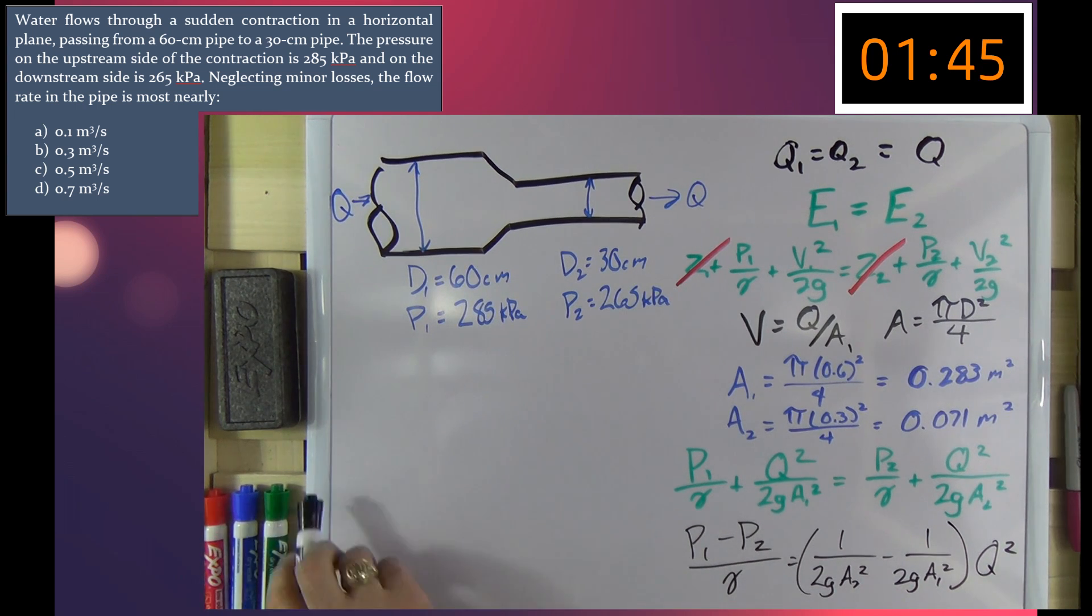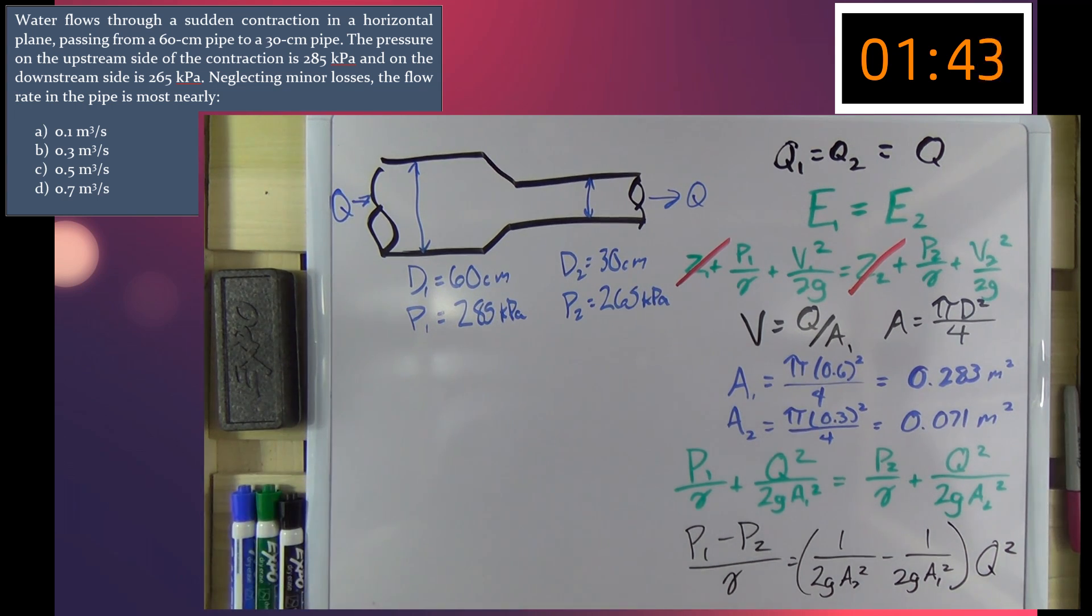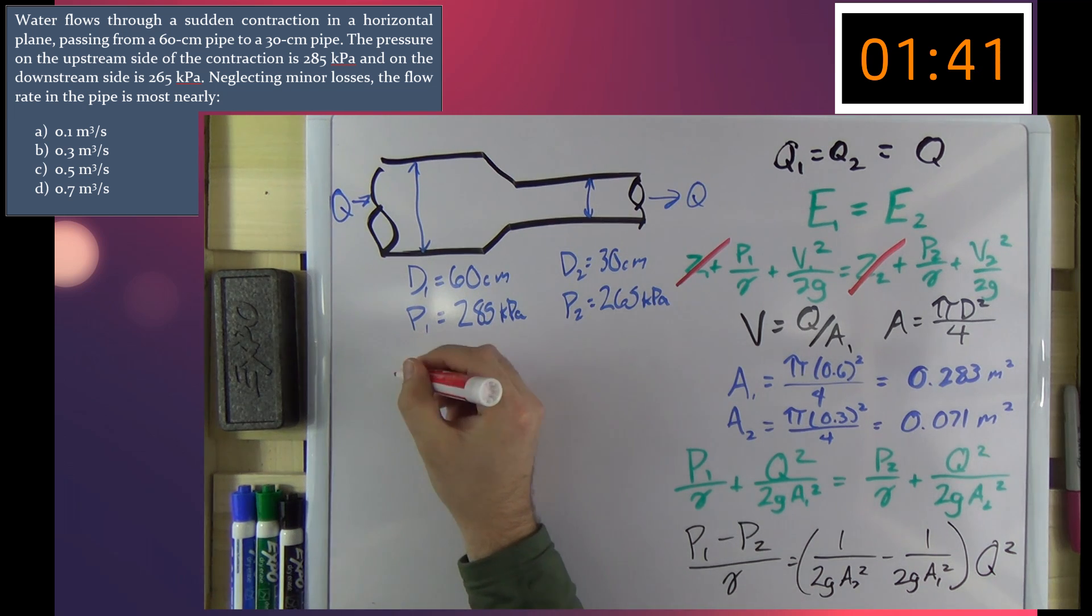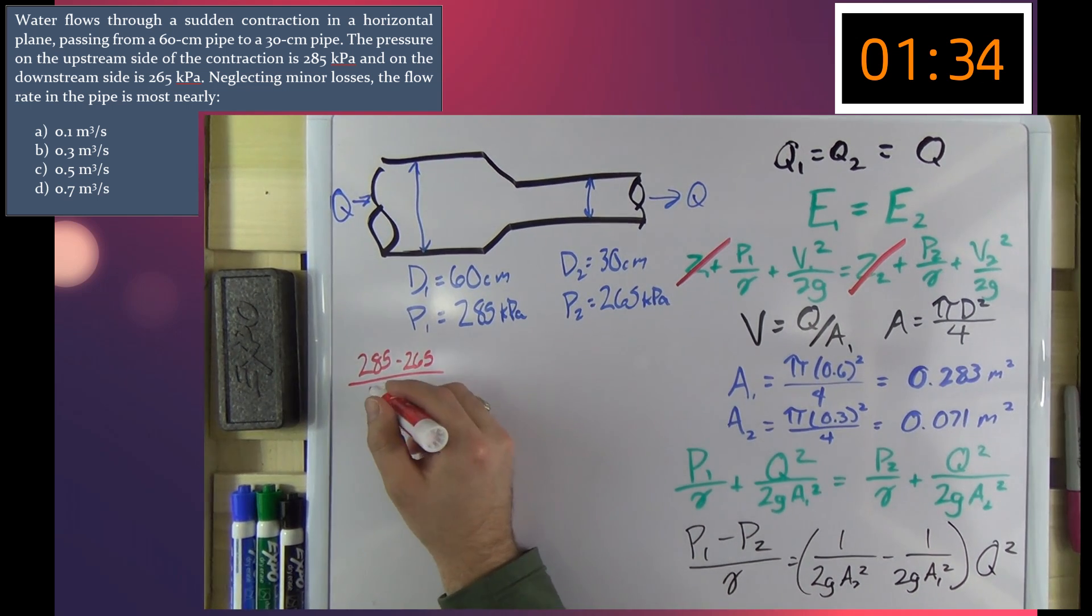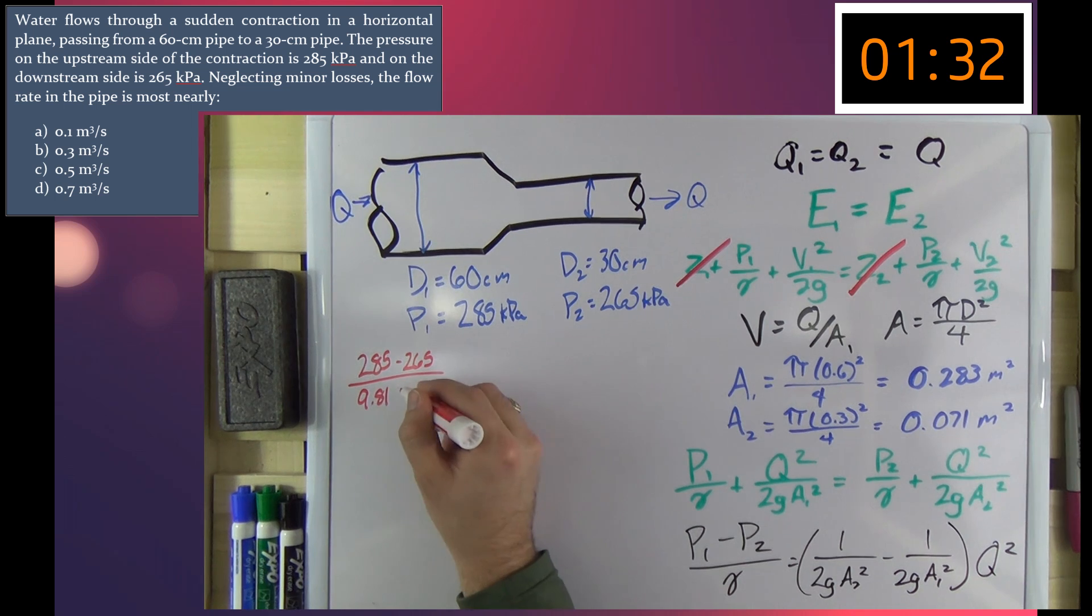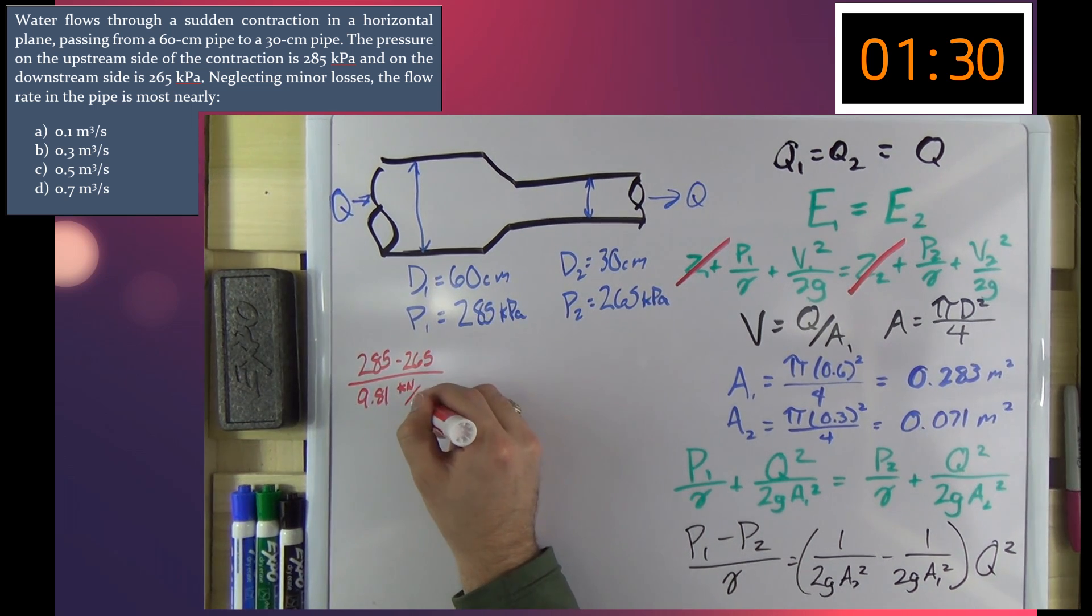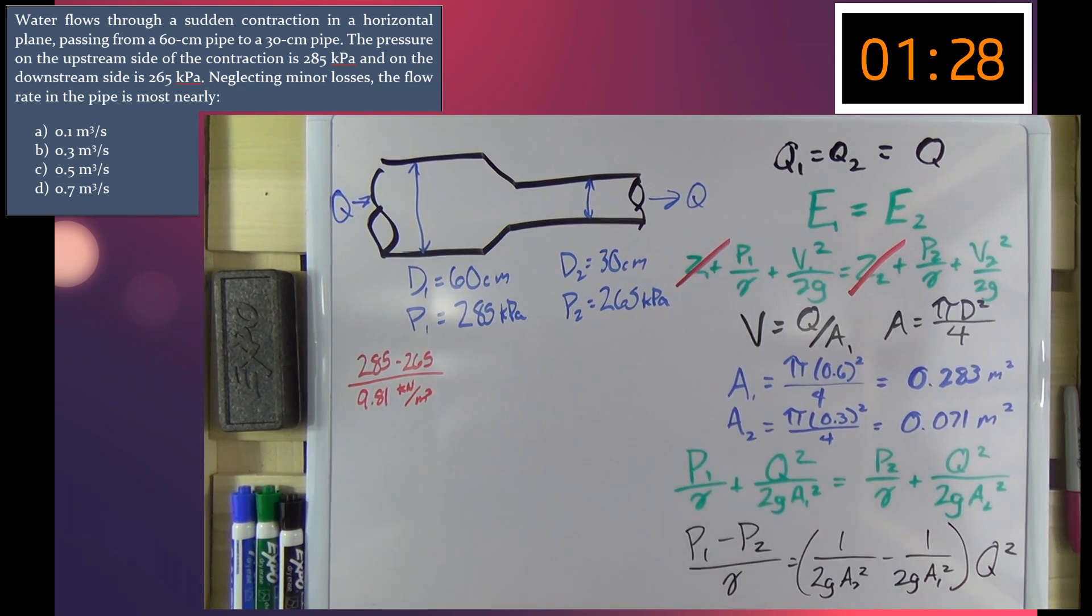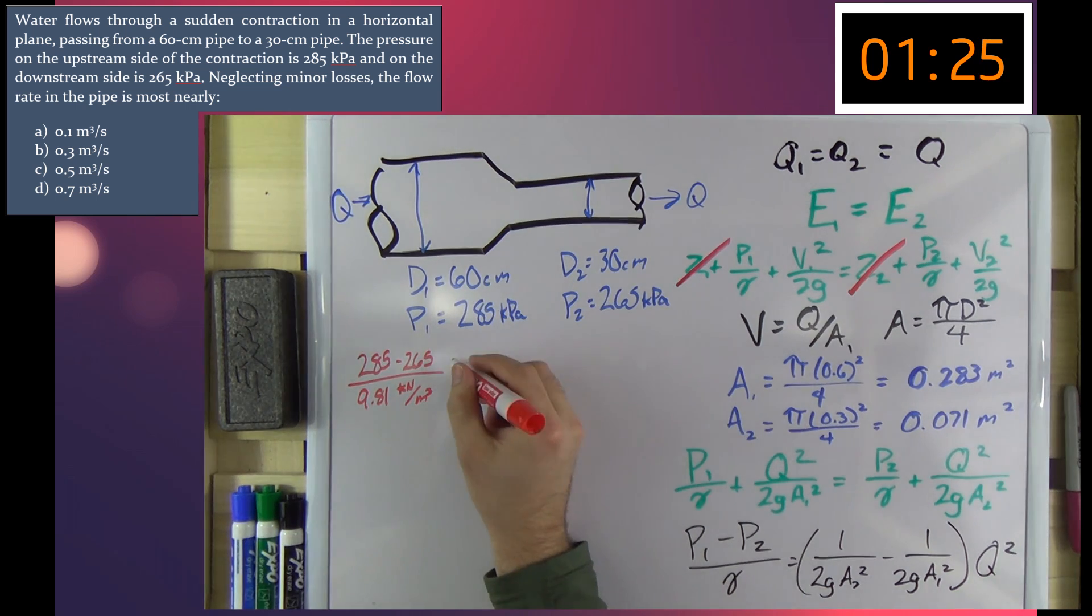And we'll jump over here and start subbing in some numbers. So P1 minus P2, that is 285 minus 265 kilopascals divided by 9.81 kilonewtons per cubic meter. It's an important number to know, you might as well put that in the old memory bank.